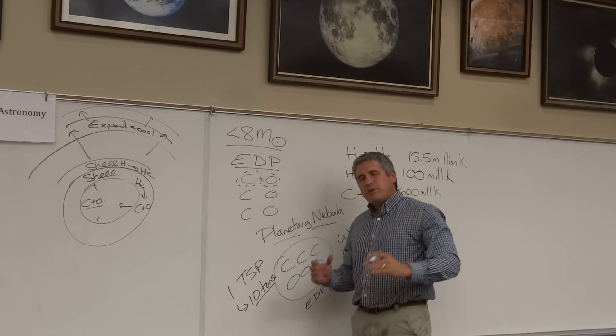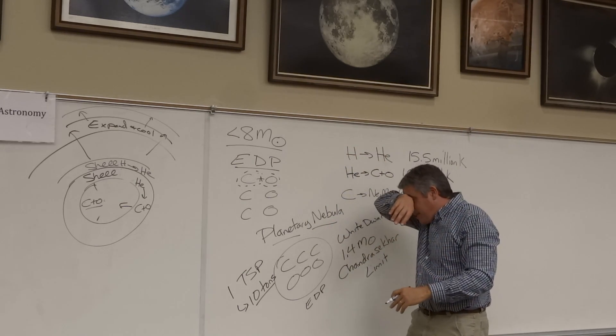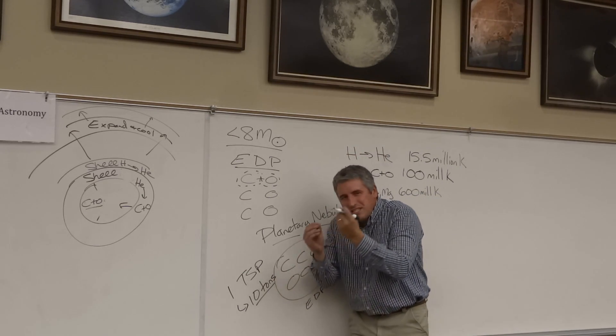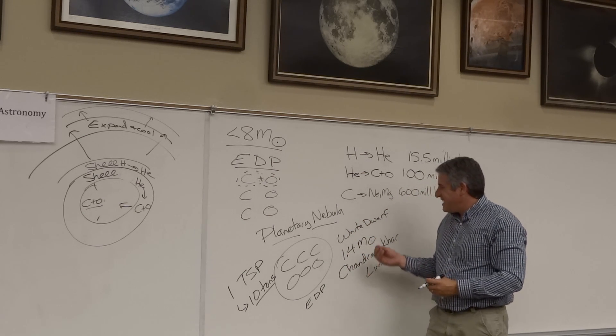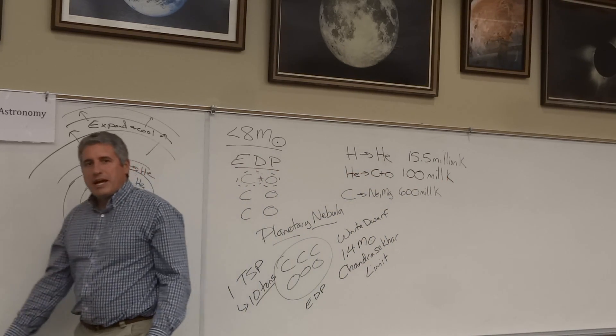So that's where we end up. We end up with this cooling object, this expanding planetary nebula, and one teaspoon worth is 10 tons for this white dwarf that masses out at 1.4 solar masses.